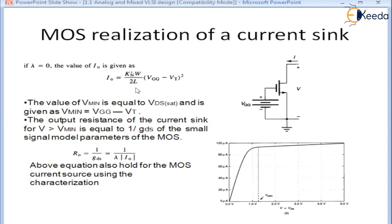That is the conductance of the drain-source channel, and from the small signal parameters of the MOS we have that R0 = RDS = 1/gDS = 1/(lambda * I0). This equation holds for both the MOS current source and the MOS current sink.